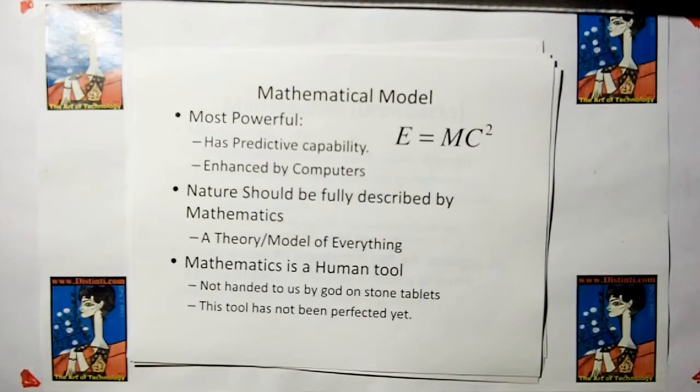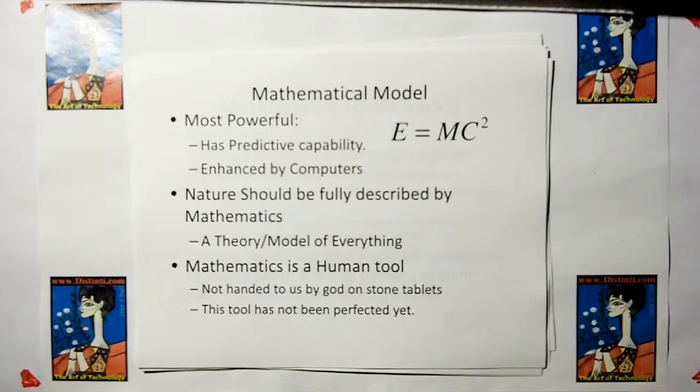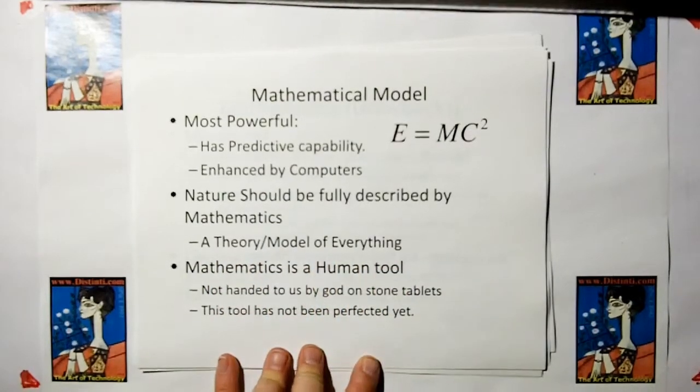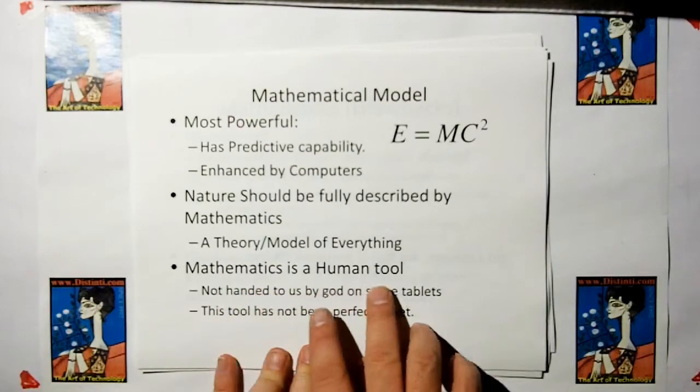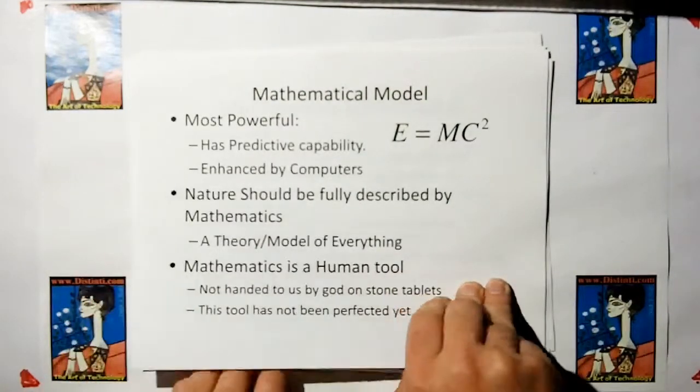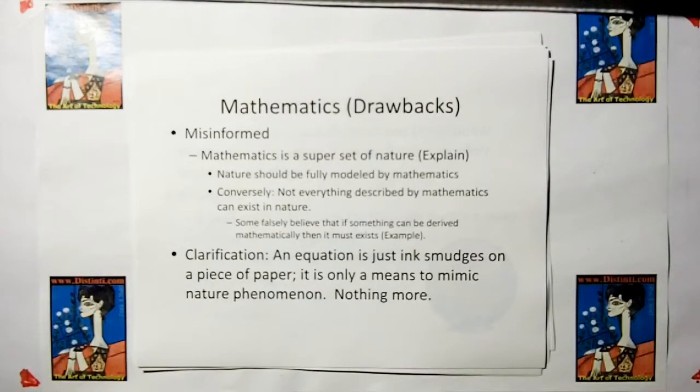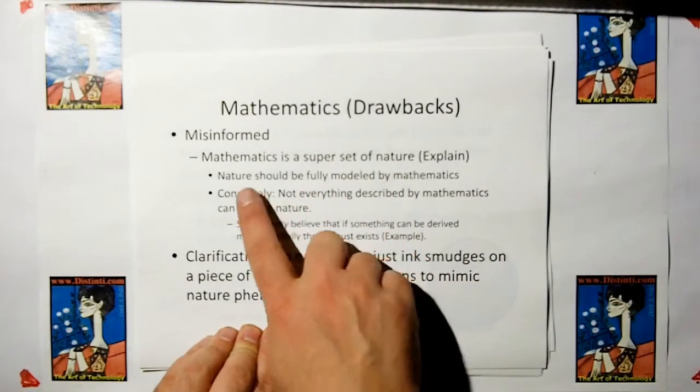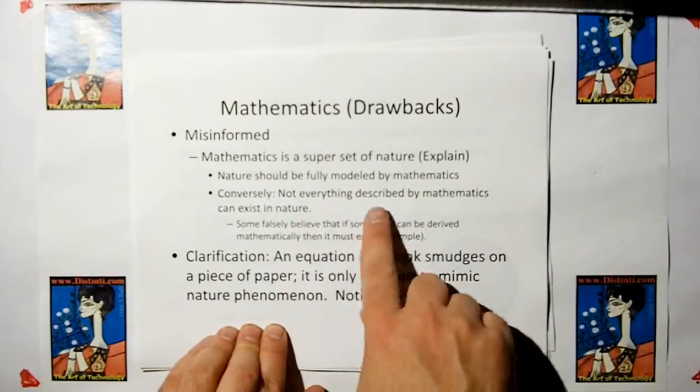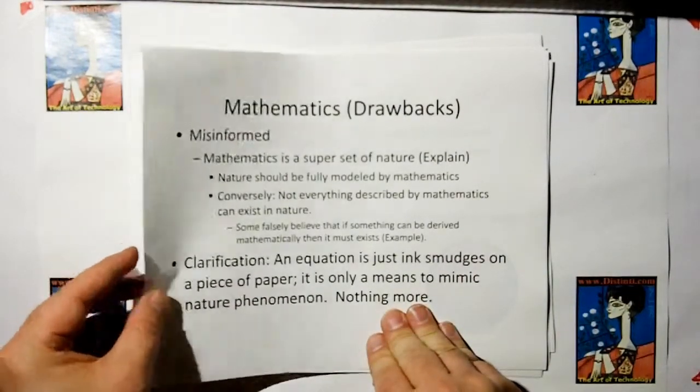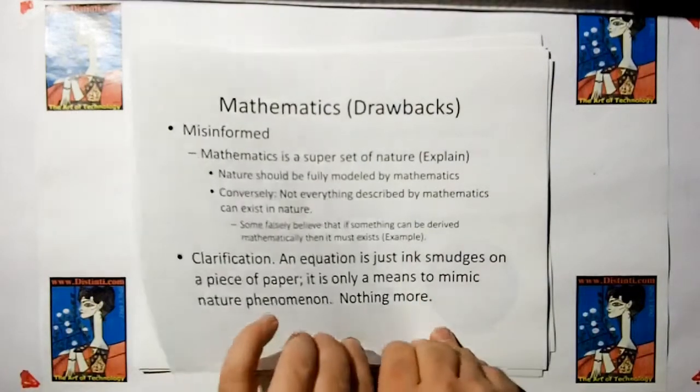Then we have mathematical models. Mathematical models are the most powerful. They have a lot of predictive capability. They can be heavily advanced by computers. Nature should be fully described by mathematics. But we've got to remember that mathematics is only a human tool. It has not been handed to us by God on stone tablets, and there's a lot of imperfections in modern mathematics. Mathematics is a superset of nature. Not everything you can derive mathematically can exist in nature.